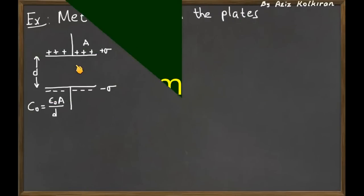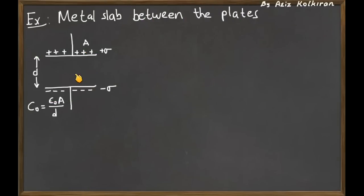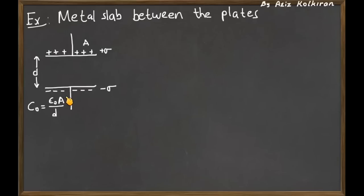We have a parallel plate capacitor with an air gap between the plates. The charge densities are sigma-plus and sigma-minus, with area A and distance between the plates given by D. The capacitance is given by the expression epsilon-zero times the area of one of the plates divided by the distance between the plates.